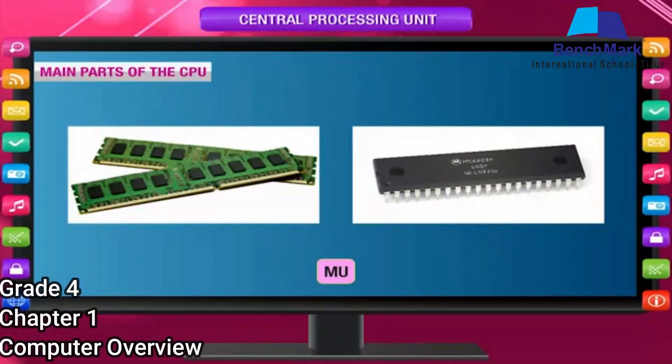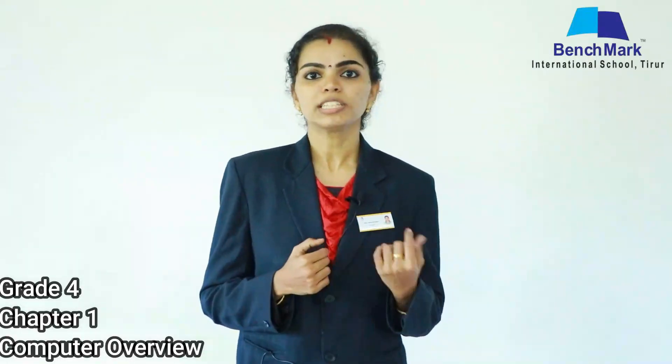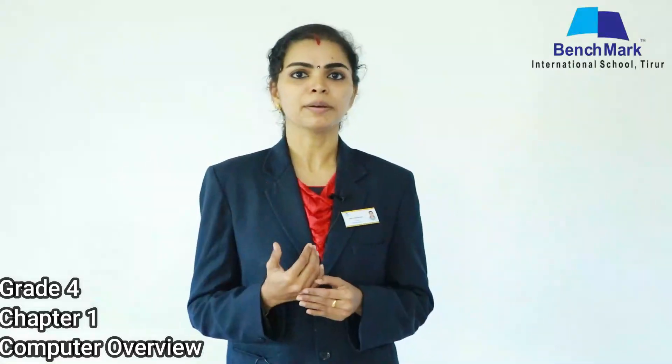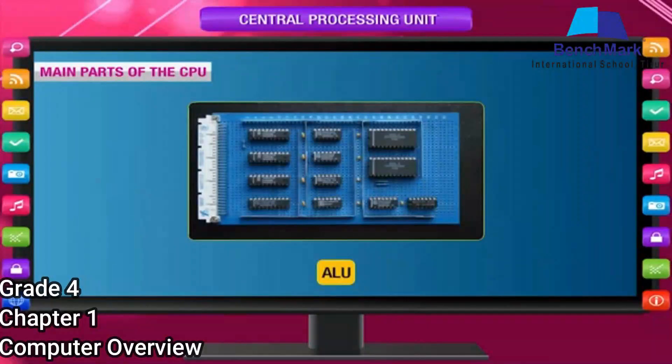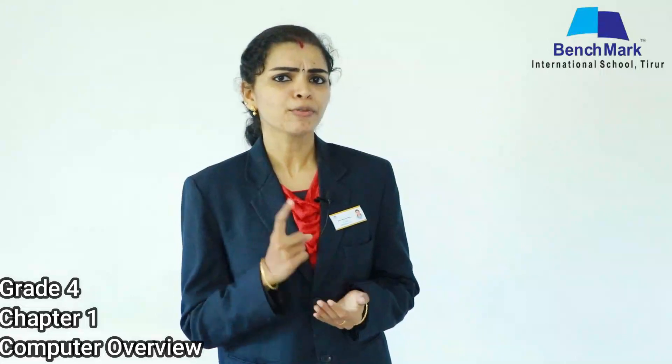The second component is the memory unit. As explained before, the memory unit is used to store the work that we do. Memory is of two types: internal and external. Internal memory is temporary, whereas external memory is permanent. If you want to store work permanently in the system, it is stored in external memory. The last part is the arithmetic and logic unit — if you are going to perform some arithmetic or logic operation, this part of the CPU is used.